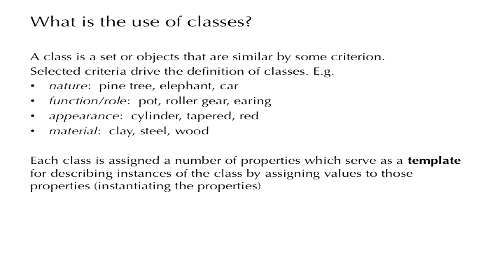Each class is assigned a number of properties, and these properties serve as a template for describing instances of the class by assigning values to those properties — that is, by instantiating them. As we saw before, person was given a number of properties, and instantiating those properties gives the description of the person PC.